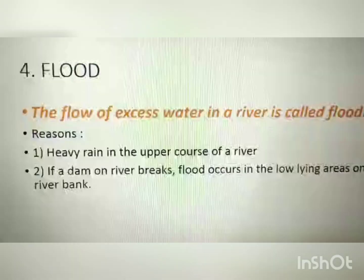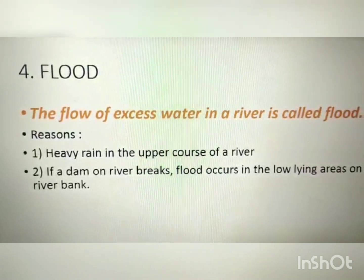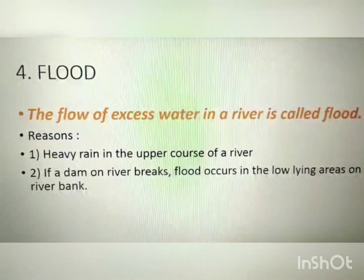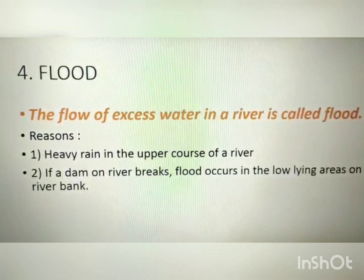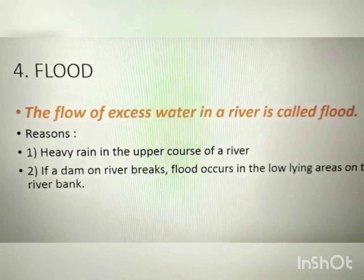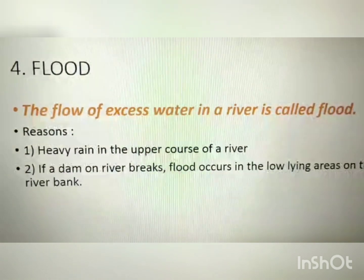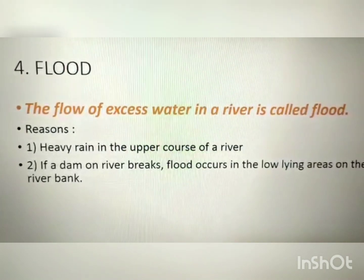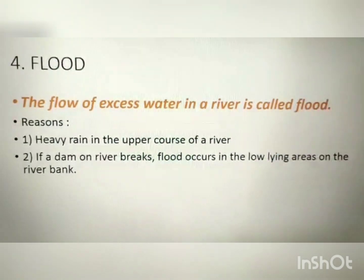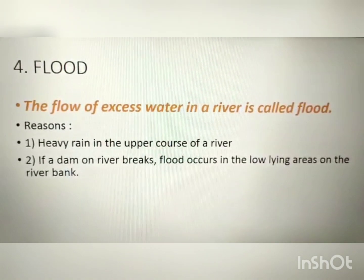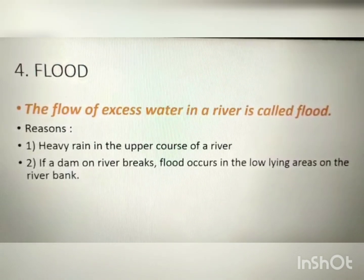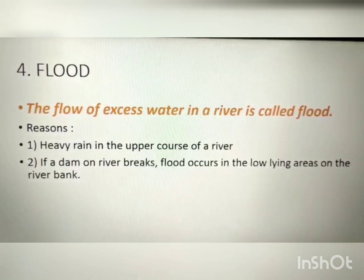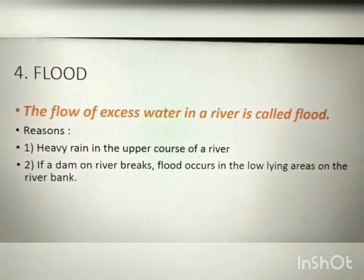Our next topic is flood. The flow of excess water in a river is called a flood. When the extra water comes into the river and flows out of the banks, that is known as a flood. The first reason for floods is heavy rain in the upper course of the river — if there is heavy rain where the river originates, the flow comes down to lower areas and that causes a flood.